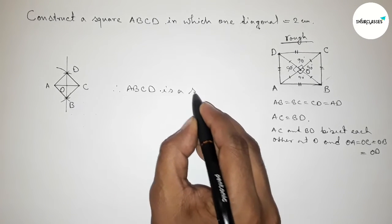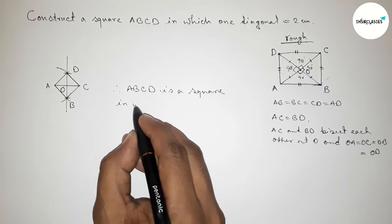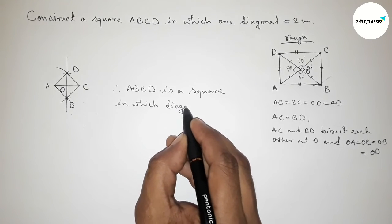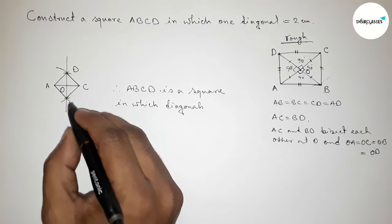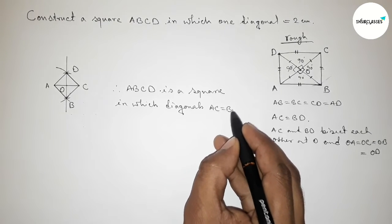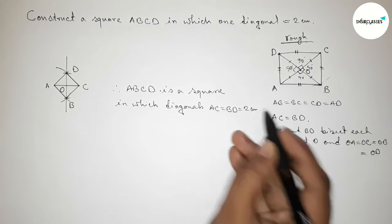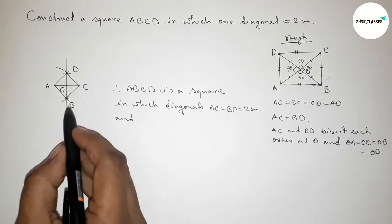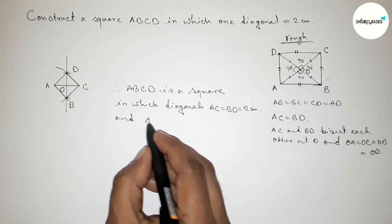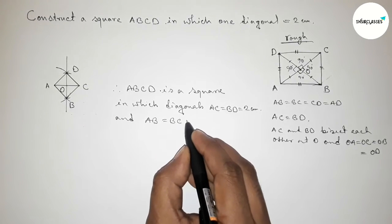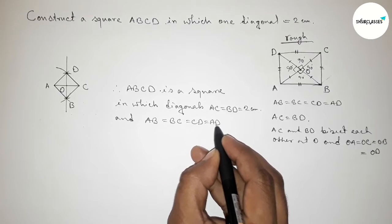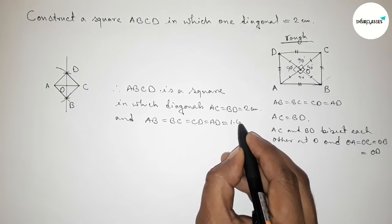So this is 1 and this is 1.41 and this is 1.41 approximately. So therefore here ABCD is a square in which the diagonal AC and BD equals to 2 cm, and the length of each side, so AB equals to BC equals to CD equals to AD equals to 1.41 cm approximately.